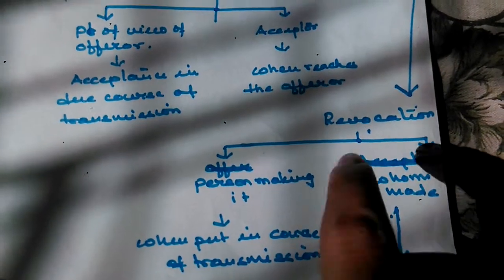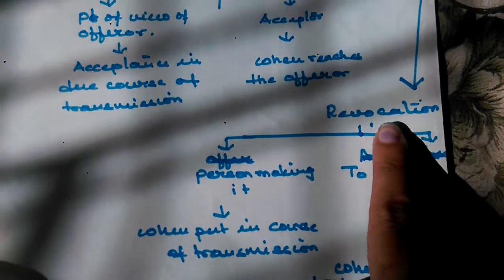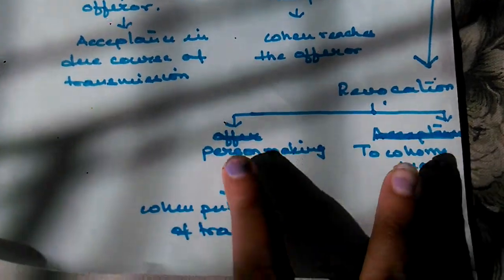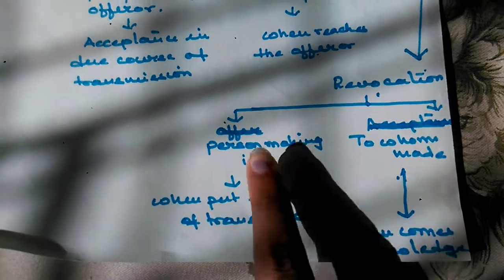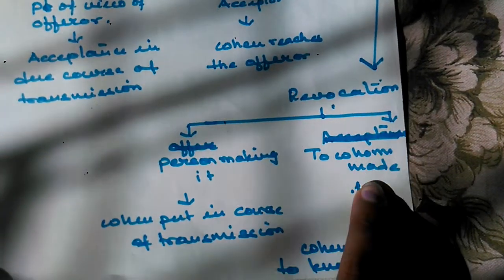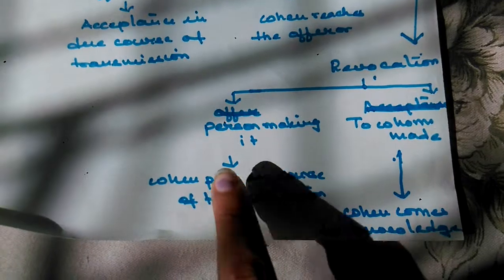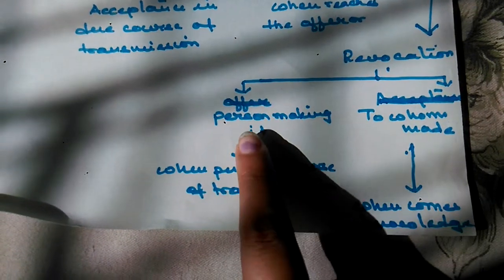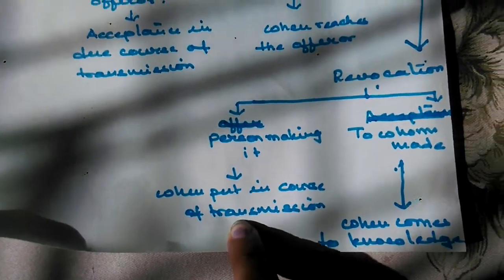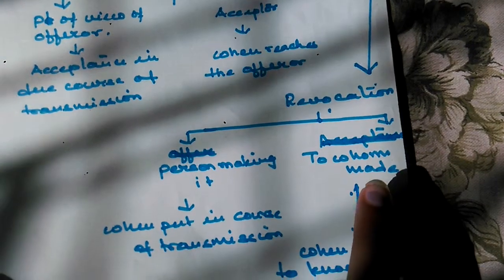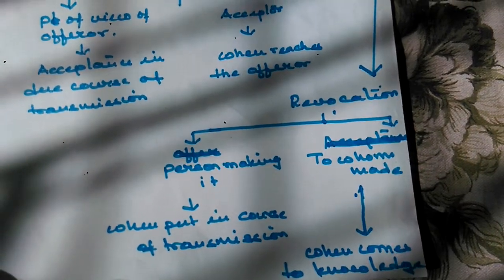The third part of Section 4 is communication of revocation. It is again divided into two parts: as against the person making the revocation, and as against the person to whom it is made. Communication of revocation is complete as against the person making it when it is put in course of transmission, and as against the person to whom it is made when it comes to their knowledge.